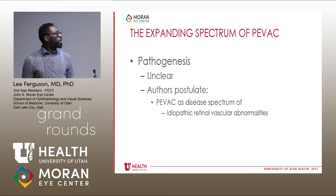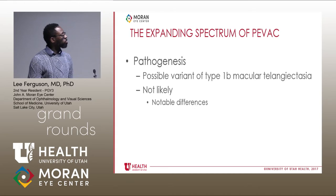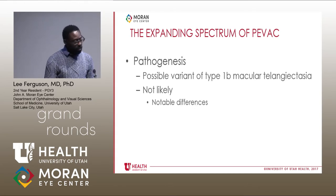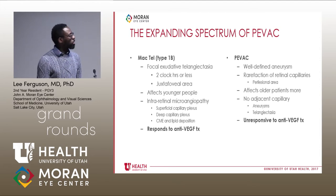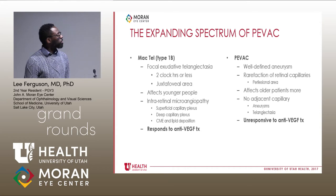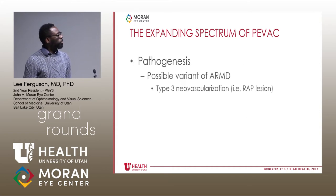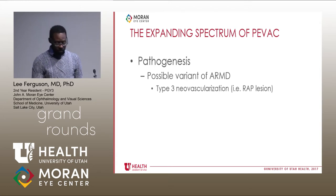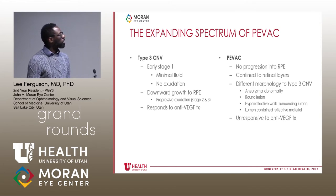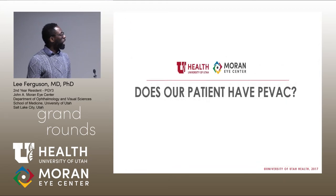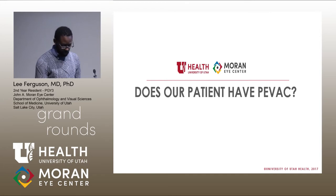There are many hypotheses regarding the pathogenesis of PVAC. The authors thought this is probably associated with an idiopathic retinal vascular abnormality. One thought is it may be a variant of type 1 Mactel, but this is most likely not the case due to differences in anatomical changes, patient demographics, and response to anti-VEGF therapy. Another thought is whether this could be a variant of type 3 neovascularization — a RAP lesion — but again, the anatomical changes and the response to VEGF therapy are totally different.